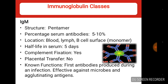Next is IgM. IgM has a pentameric structure and is present in serum at 5–10%. Its location is blood, lymph, and B cell surface. The half-life in serum is 5 days and IgM cannot cross the human placenta. IgM is the first antibody produced during an infection and acts against microbes and agglutinating agents.